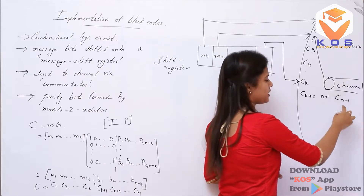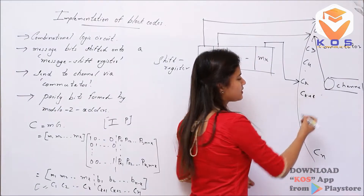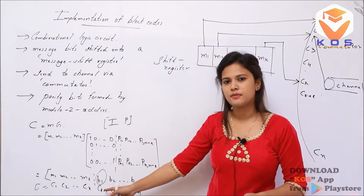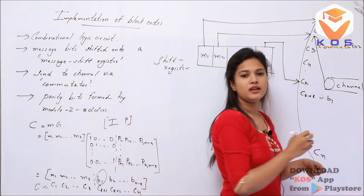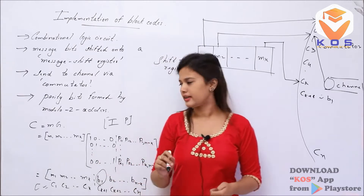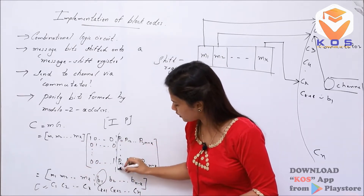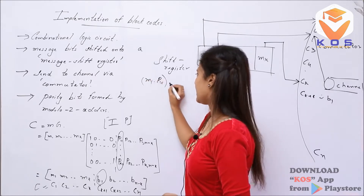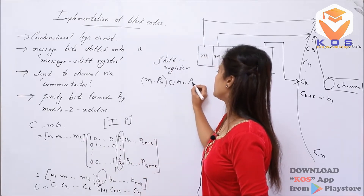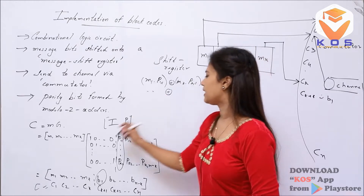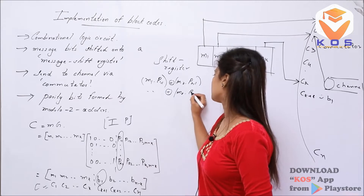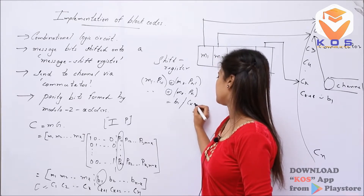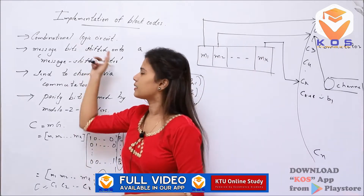This bit is equivalent to parity bit B1. How do we obtain B1? We do a matrix multiplication: M1 multiplied by P11, XORed with M2 multiplied by P21, XORed with Mk multiplied by Pk1. That gives us the element Ck+1. We can implement this using a combinational circuit.